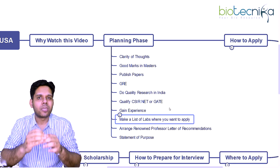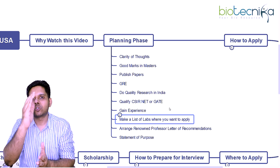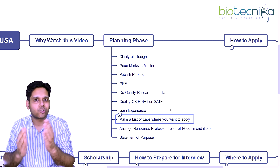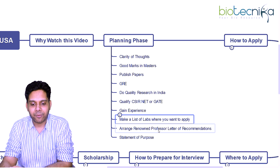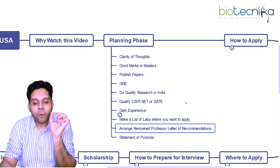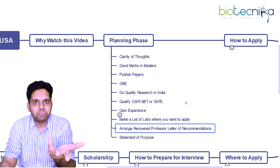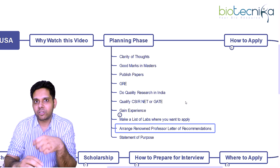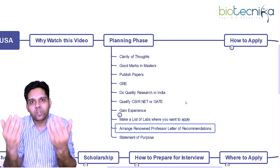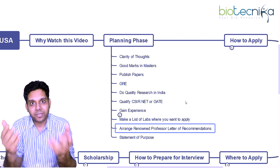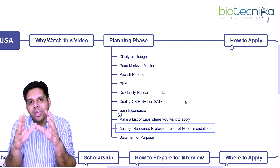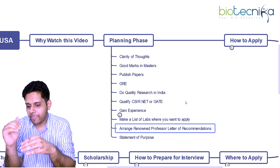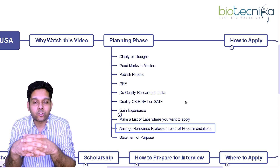Gain experience in research — and also in teaching, because that helps especially when going for postdoc. After your master's, if you gain some teaching or research experience, it's going to be very helpful. Make a list of labs and universities where you want to apply, create a priority list that matches your GRE score, and then start applying. Letters of recommendation from renowned professors and your current employer are very important.